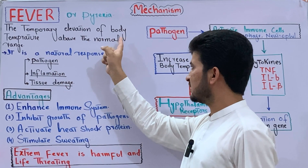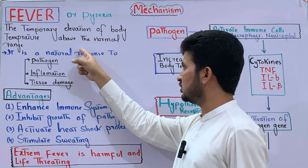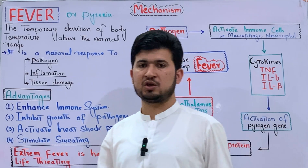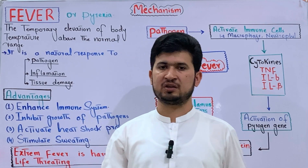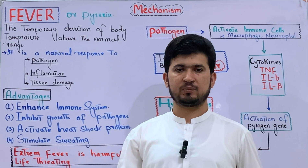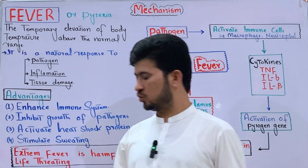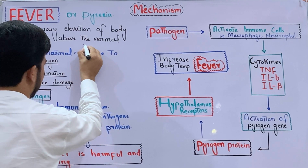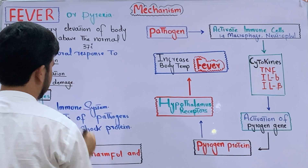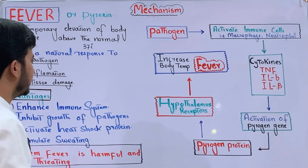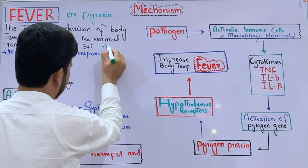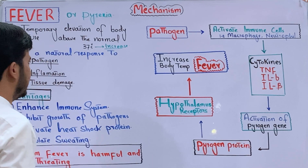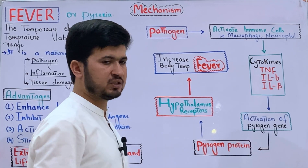The body temperature normally increases above its normal range under a certain condition — that condition is called Pyrexia. The human body's normal temperature is 37 degrees centigrade. When the temperature elevates above 37°C, that condition is Pyrexia.